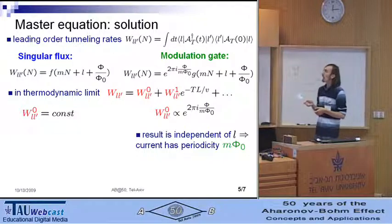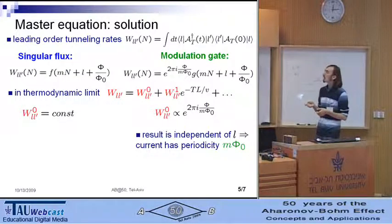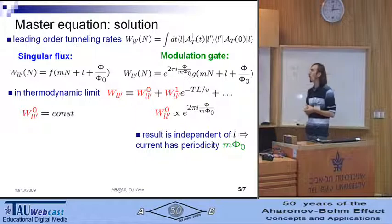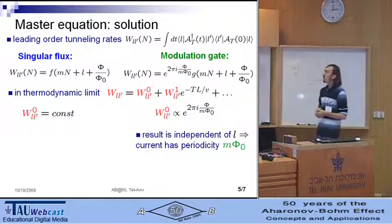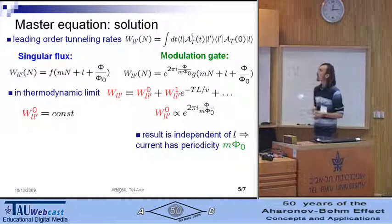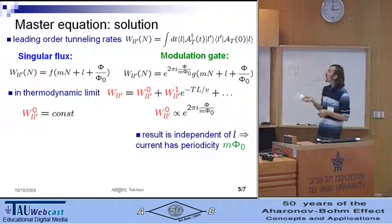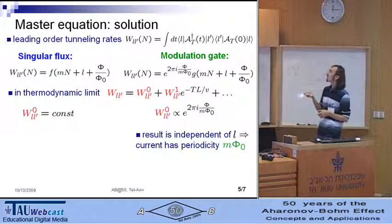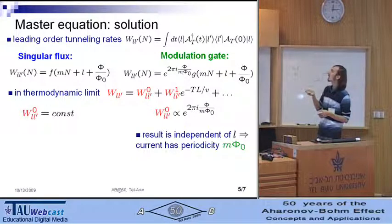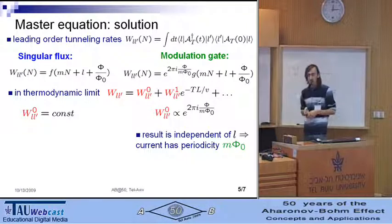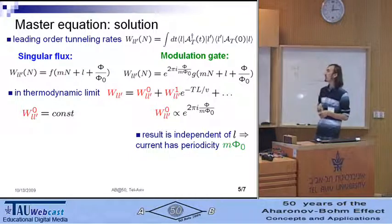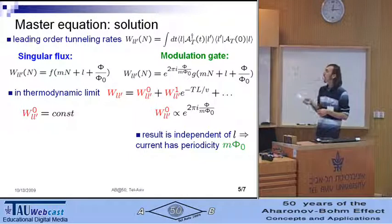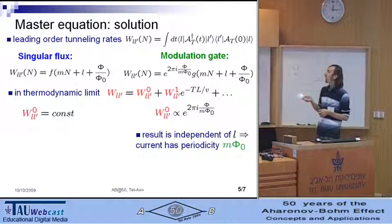In case of singular flux, these tunneling rates are functions only of the linear combination of the quantum numbers N, L, and phi, which is natural as we see on the previous slide. While in case of modulation gate, the tunneling rates contain also additional phase factor which comes from the tunneling amplitudes. The sum over N is calculated in thermodynamic limit.